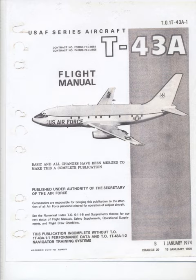Example AFM content includes V-speeds, aircraft gross weight, maximum ramp weight, maximum takeoff weight, manufacturer's empty weight, operating empty weight, center of gravity of an aircraft, lift-to-drag ratio, and zero fuel weight. A typical AFM is a pilot's operating handbook, which became the standard format for an AFM after 1978.